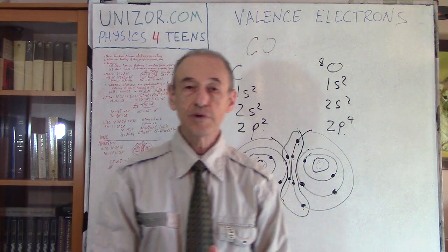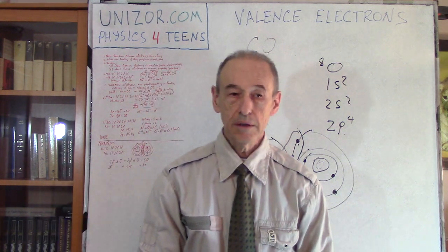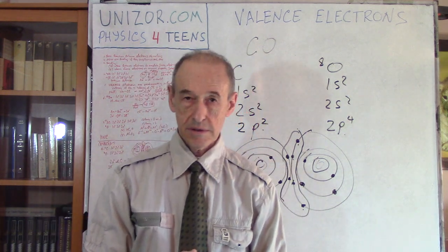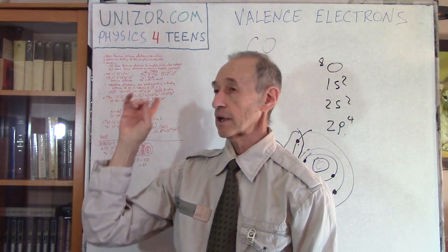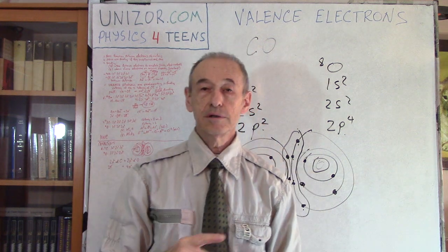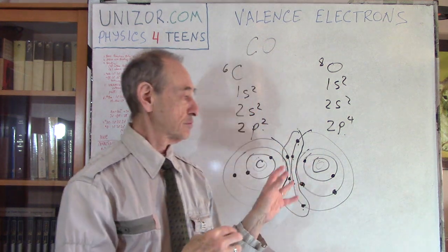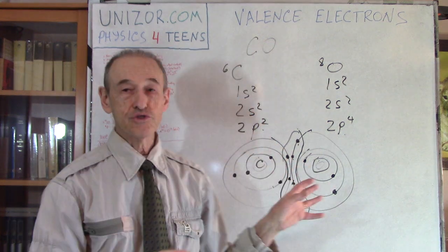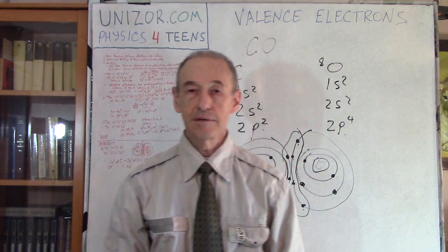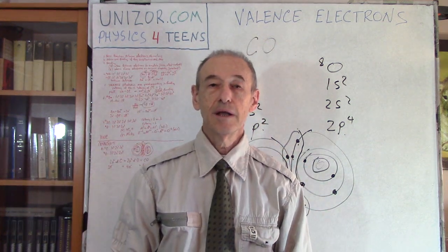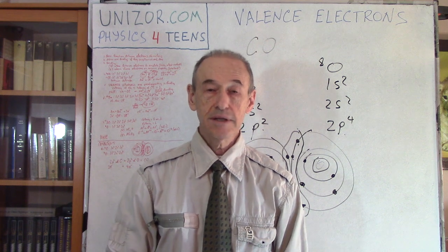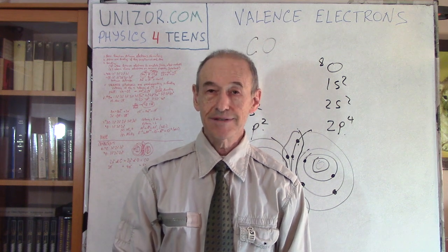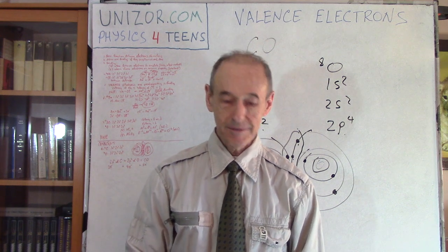That's all I wanted to talk about today: how molecules are combined from atoms via ionic (electrovalent) bonding — where electrons transfer from one atom to another — and covalent bonding — where electrons are shared. I suggest you read the notes for this lecture on unizor.com, which has better pictures. Thanks a lot, and good luck.